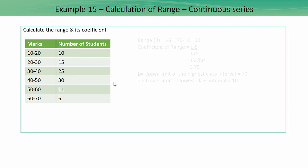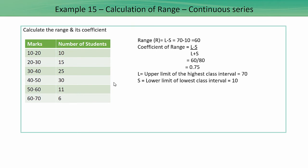The formula to calculate range is L minus S, where L is the upper limit of the highest class interval. In this data, L is 70. S is the lower limit of the lowest class interval, which is 10. So range equals 70 minus 10, which gives us 60.